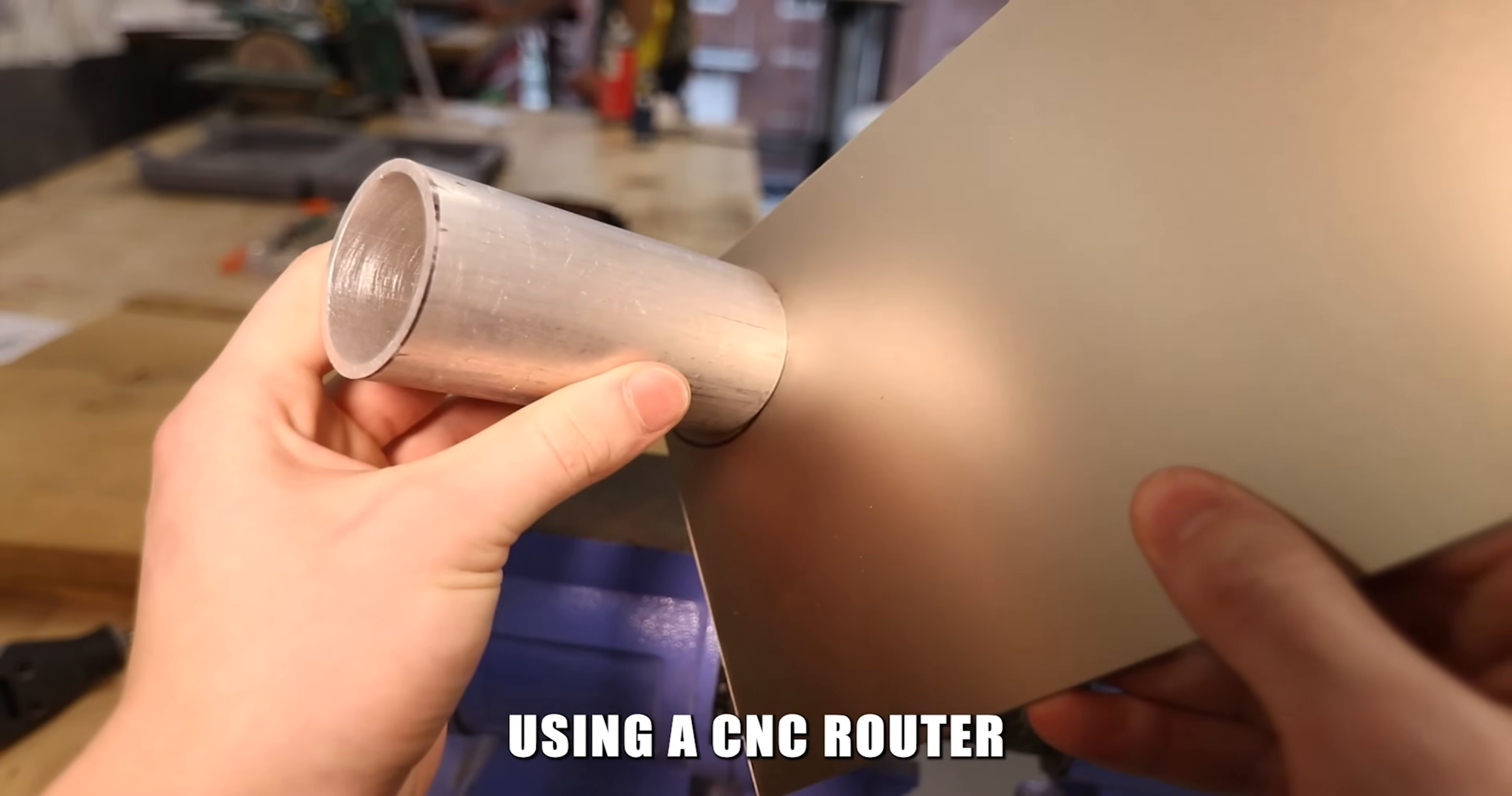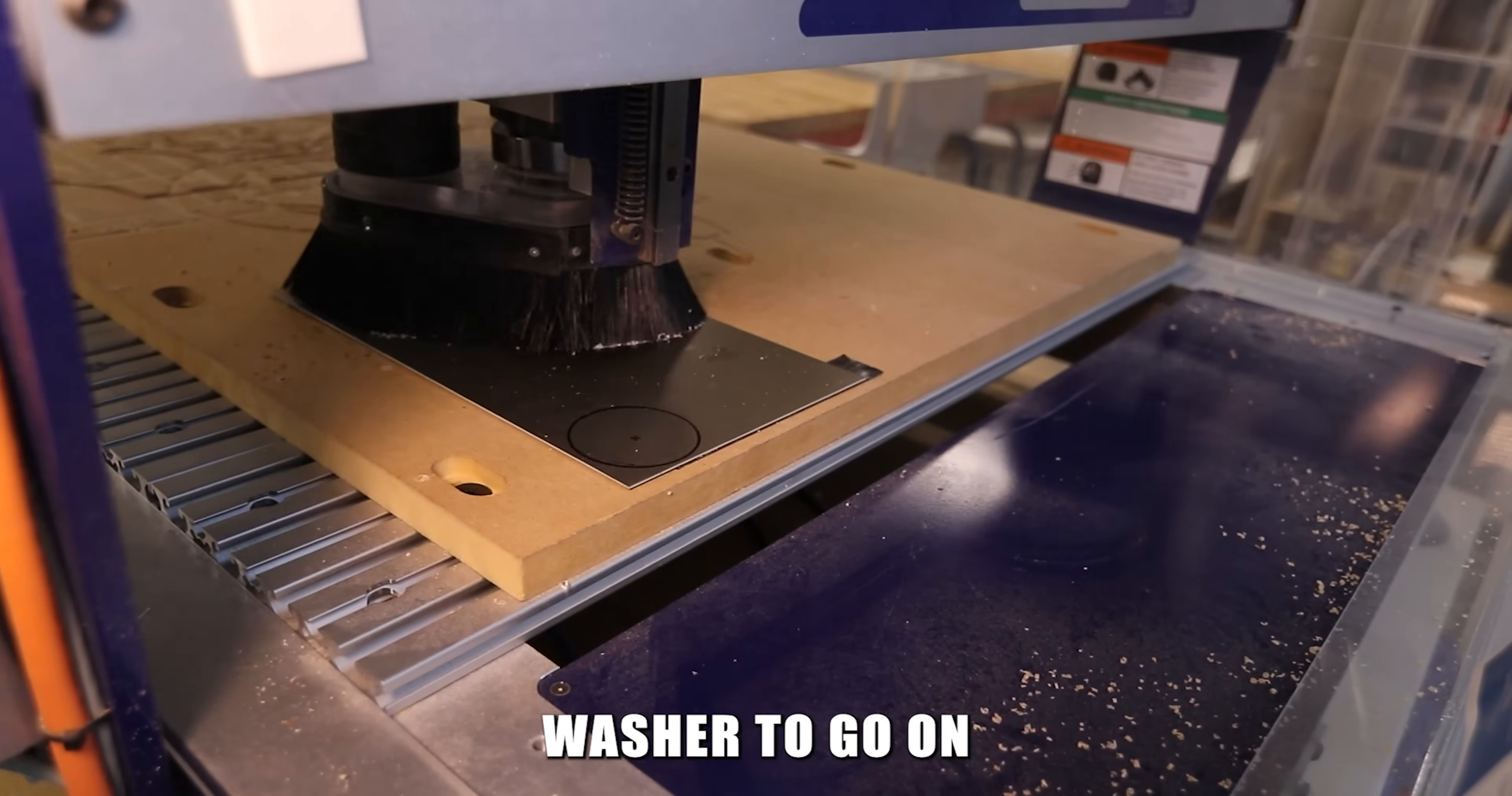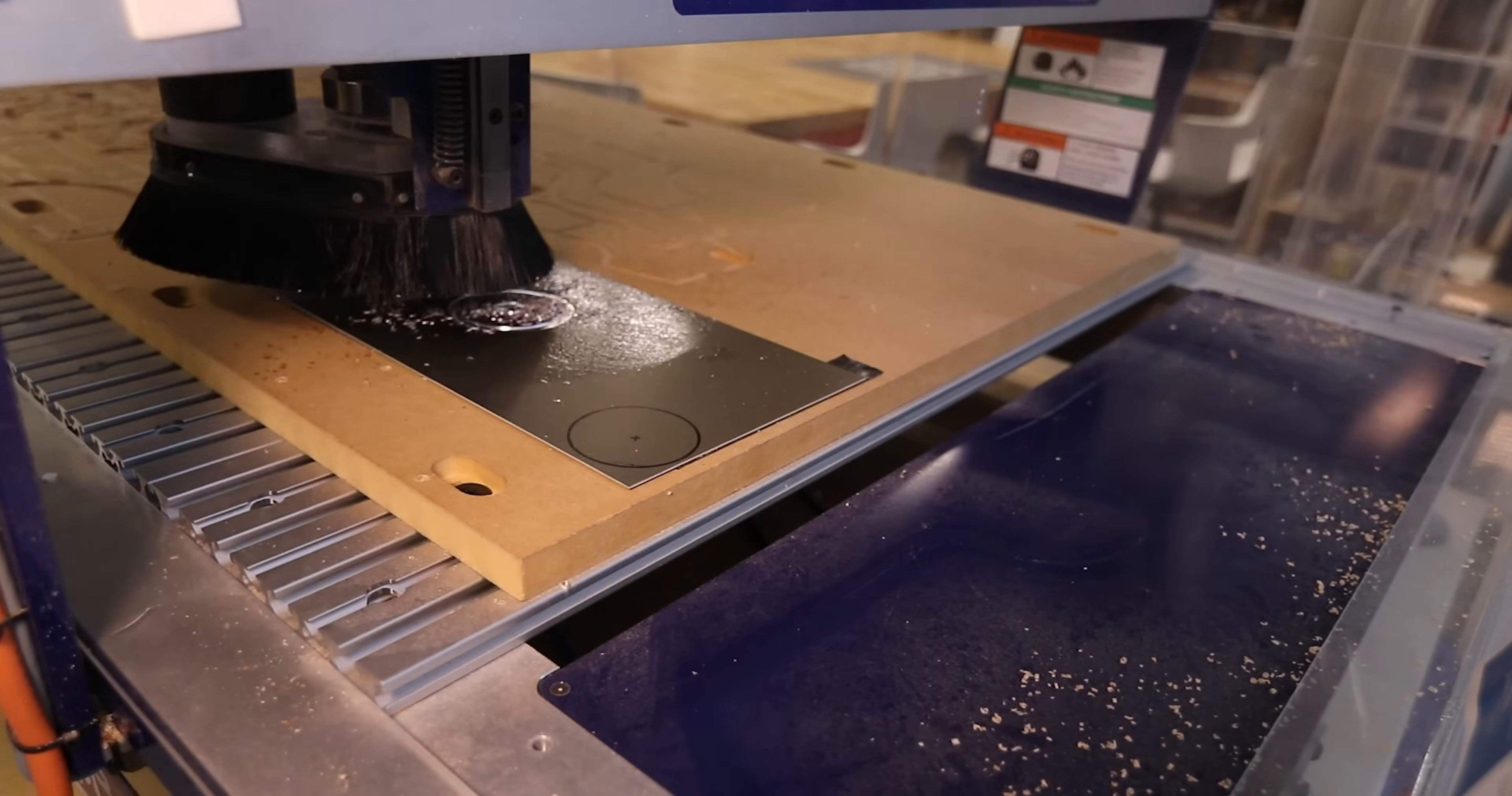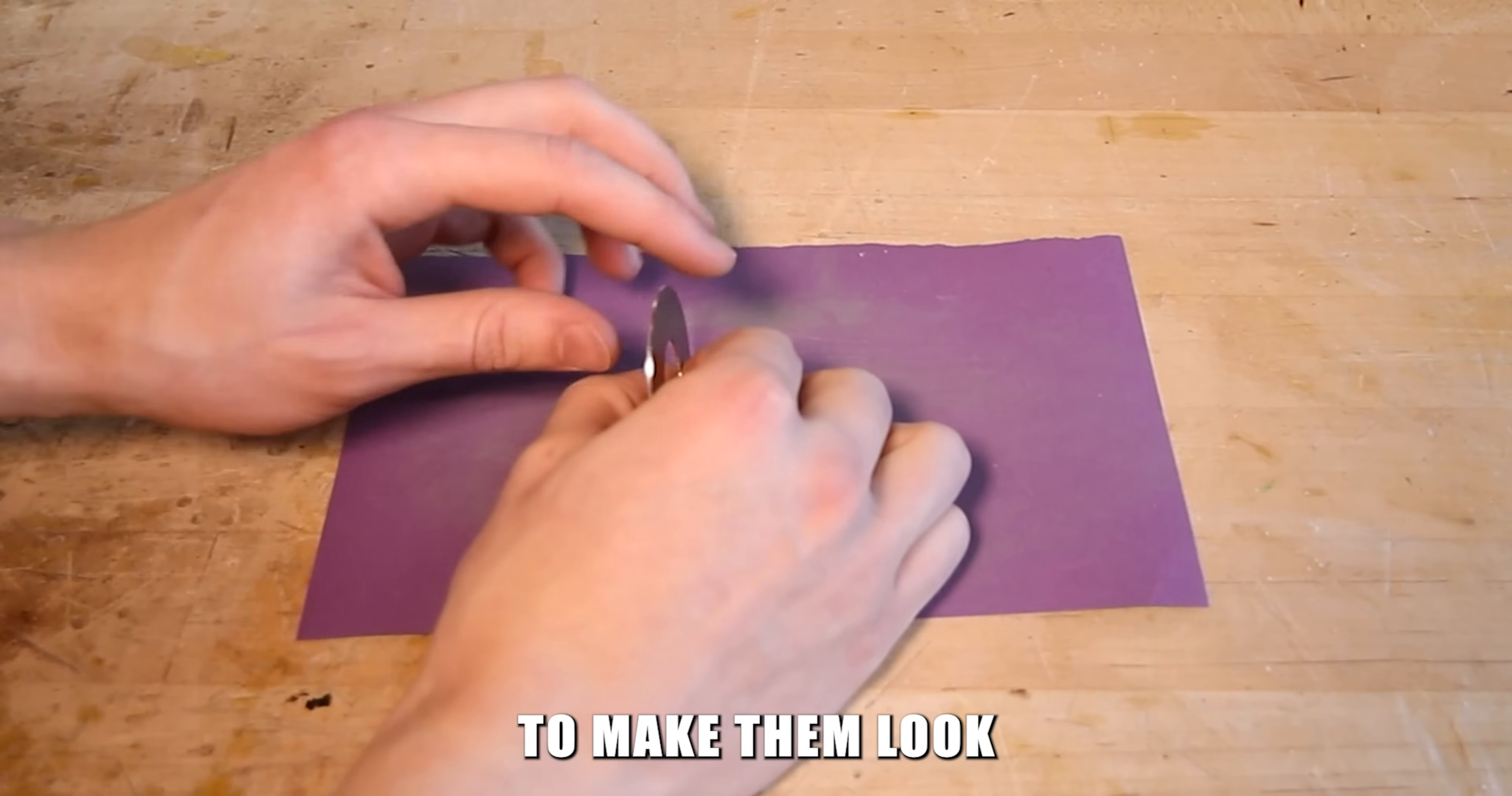I had some help using a CNC router to make an aluminum washer to go on the bottom of the new tube. I sanded the aluminum parts to make them look more uniform.